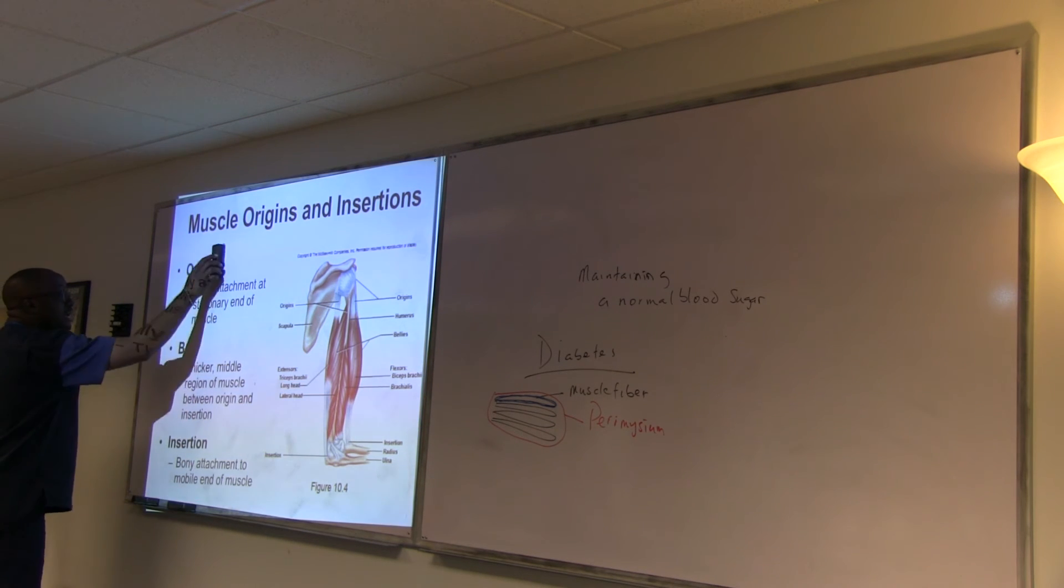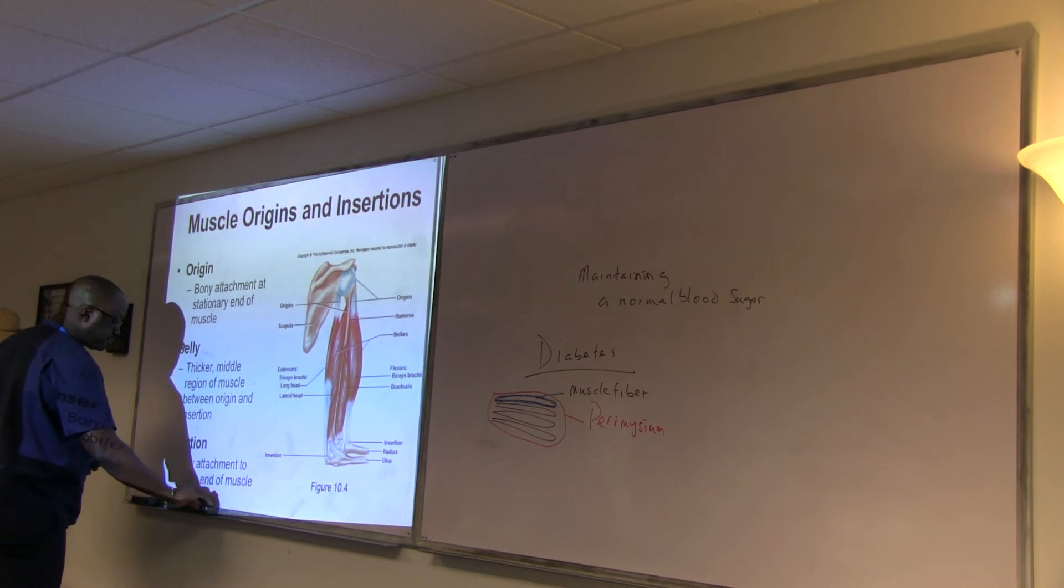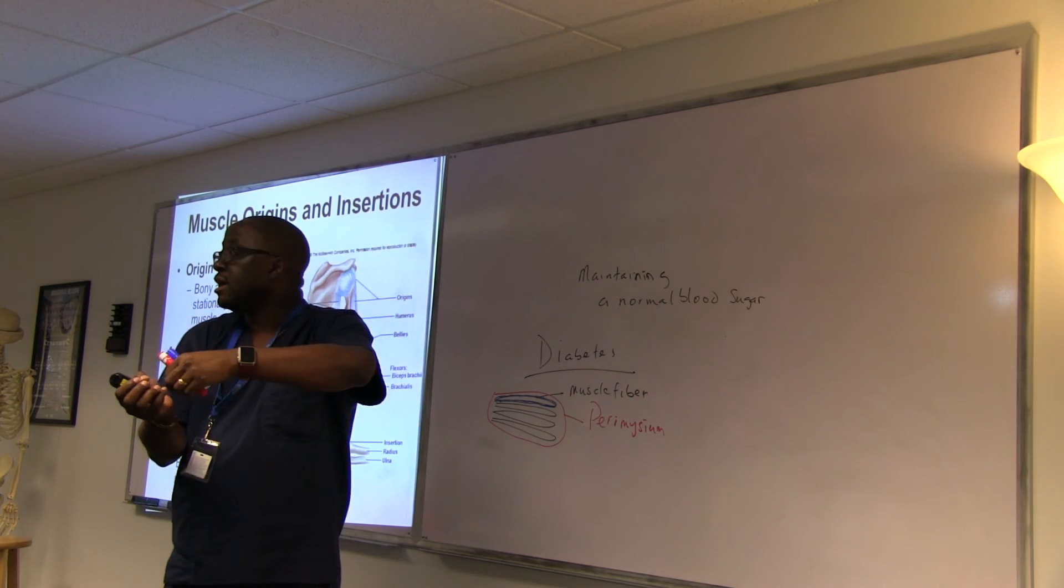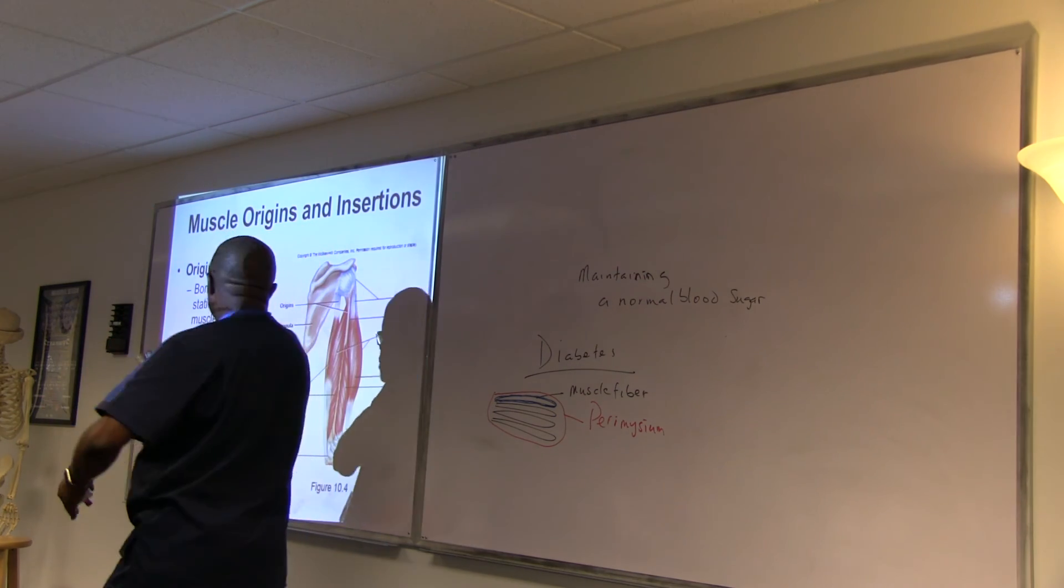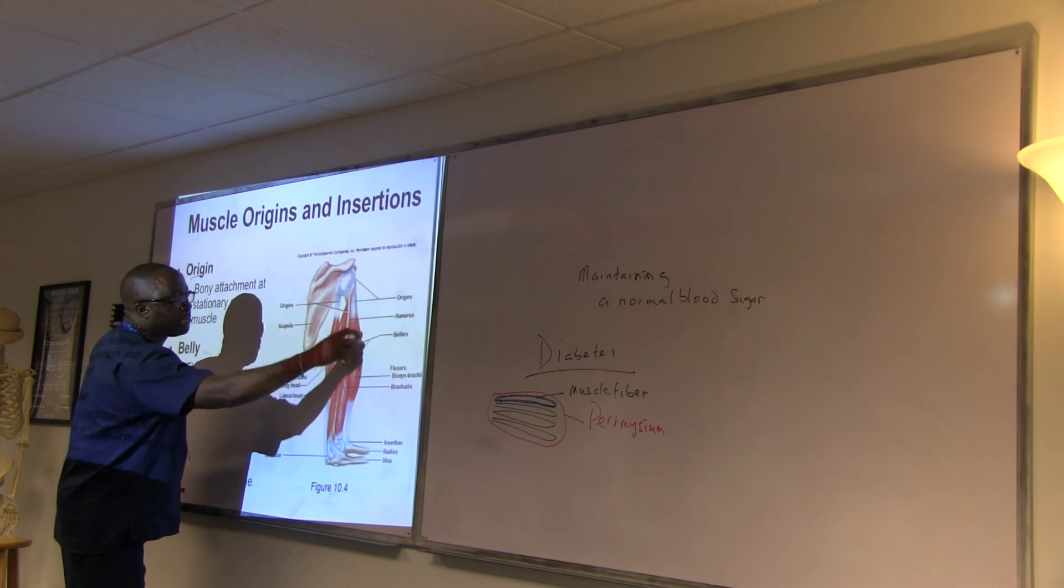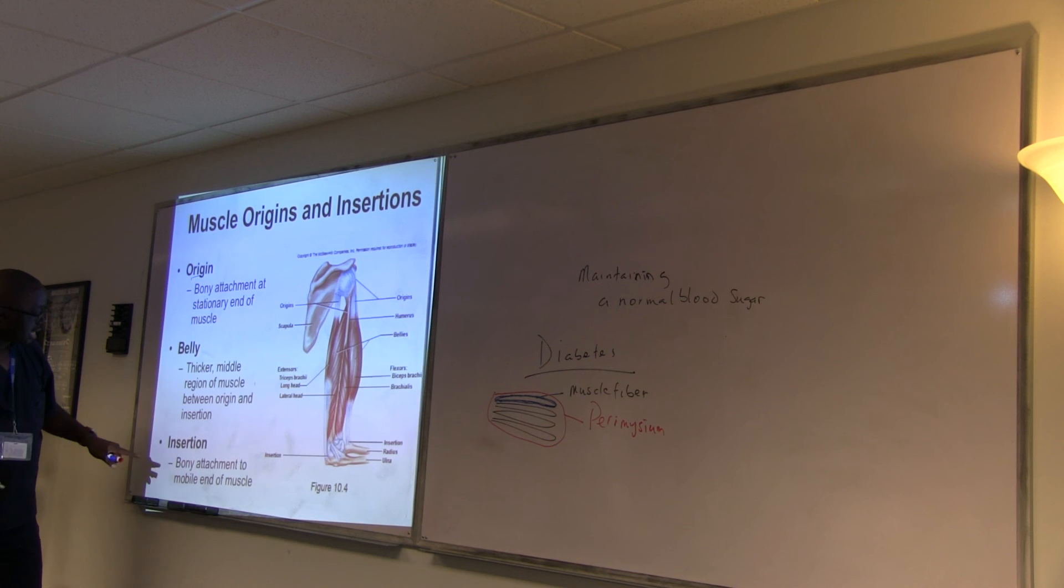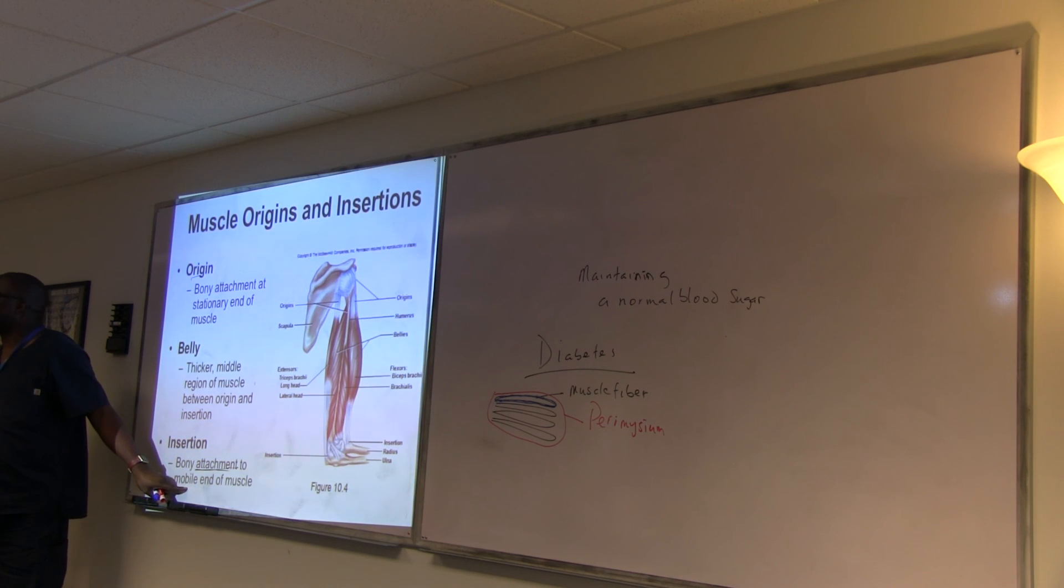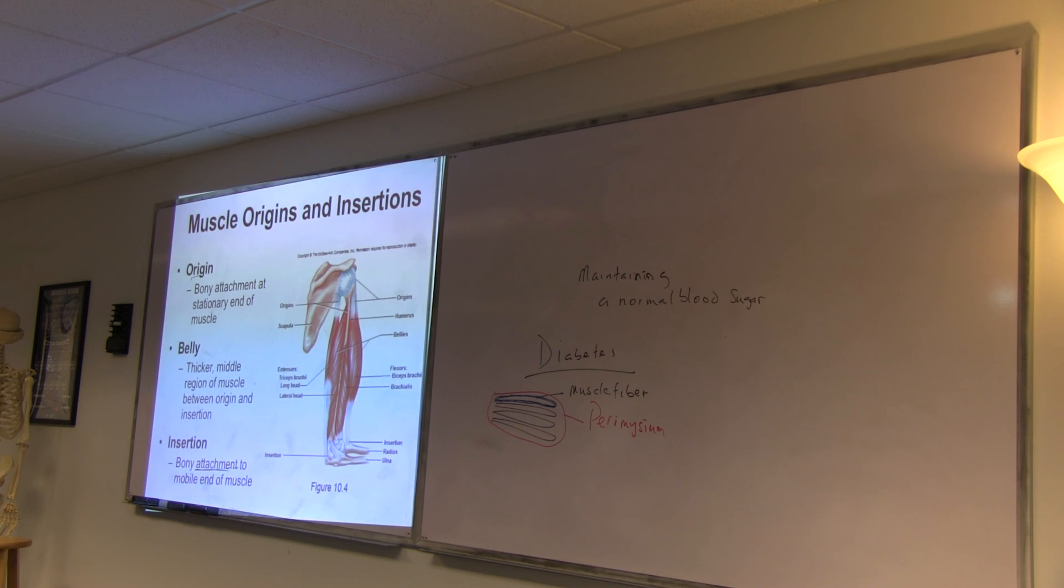Alright. So muscles, the way they are attached to the bone, there are ways that they are attached to the bone. We always say it's through tendons. But there is what we call origin, belly, and insertions. Origin is where the muscle is actually originated from. The belly is that part of the muscle that is going to contract and cause the action. And the insertion is where it's going. So origin is the starting point. The belly, that's the thicker part of the muscle where the contraction is actually taking place. Insertion is where it's going to get attached to. And where the action of the muscle is going to be coming up.